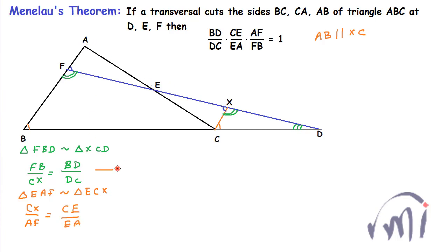And now if I call this equation number 1 and this as equation number 2, and if I multiply both equations, I'll get FB divided by CX multiplied by CX divided by AF is equal to BD divided by DC multiplied by CE divided by EA.